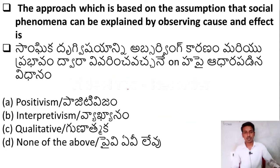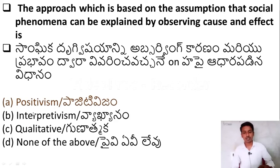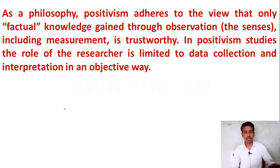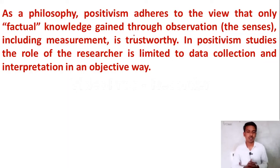The next question: the approach which is based on the assumption that social phenomena can be explained by observing cause and effect is — Option A: positivism; Option B: interpretivism; Option C: qualitative; Option D: none of the above. The correct answer is Option A — positivism. As a philosophy, positivism holds that only factual knowledge is gained through observation, where knowledge is gained through the senses.